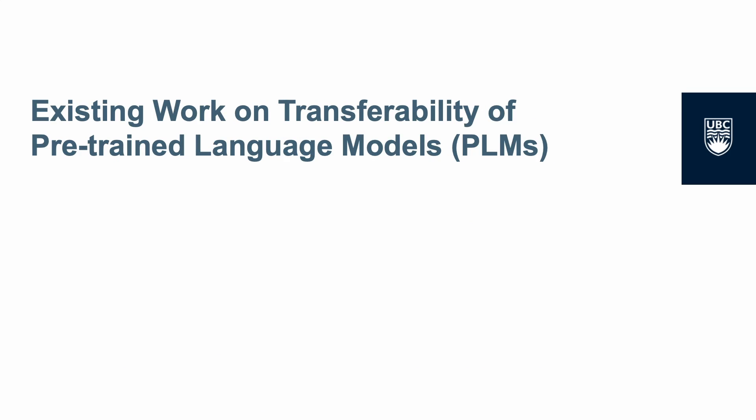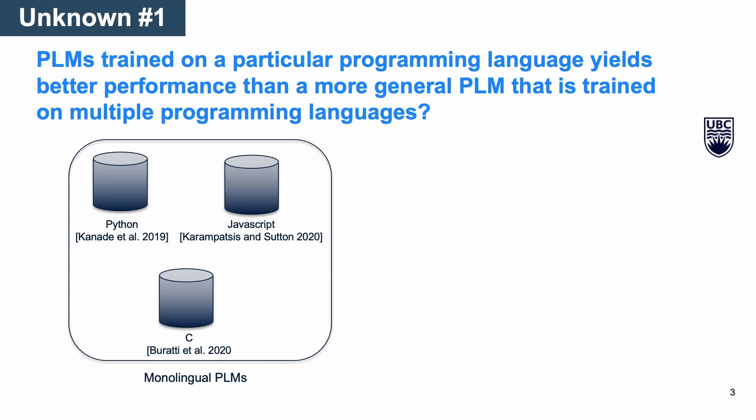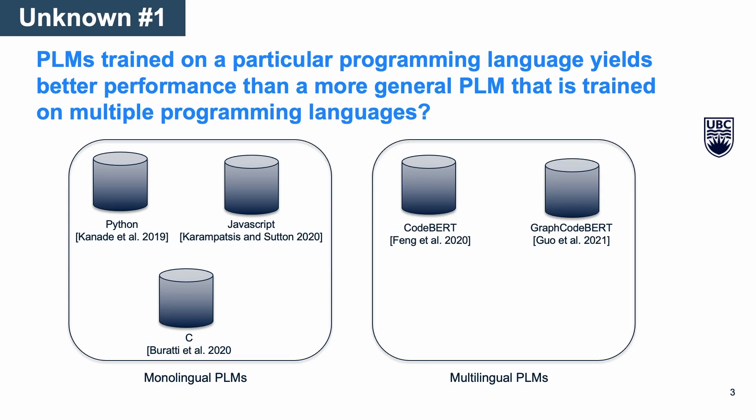In this work, we refer to a pre-trained language model as PLM. There have been some attempts to understand how PLMs affect the performance of different downstream tasks. Despite the existing efforts, there are still many unknowns on the transferability of PLMs for programming languages. Existing PLMs are trained either on a single programming language or on multiple programming languages, and little is known about whether PLMs trained on a particular language yield better performance than a more general PLM trained on multiple languages.